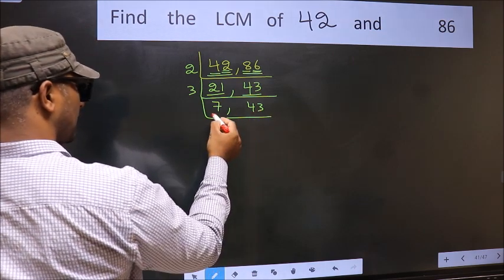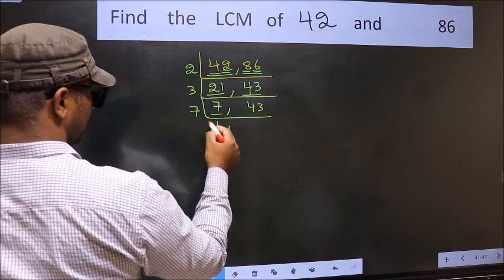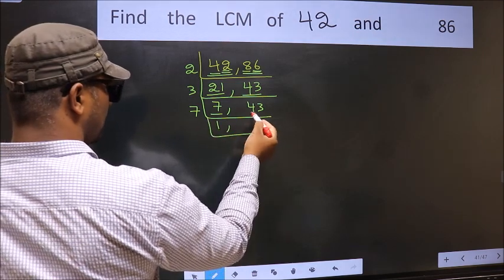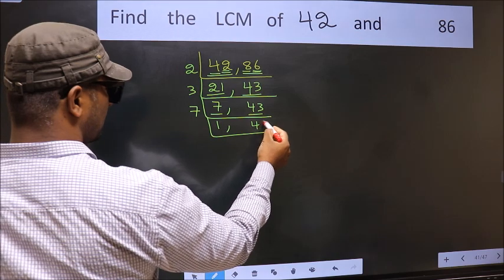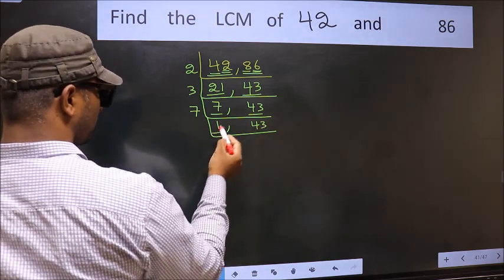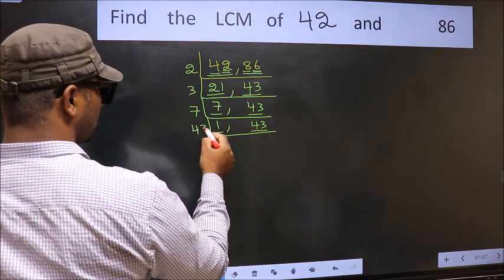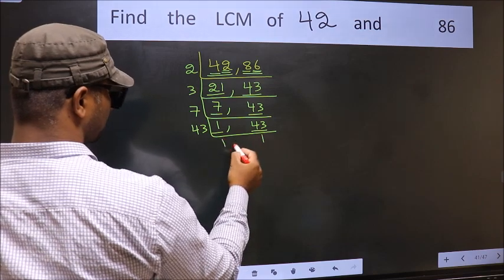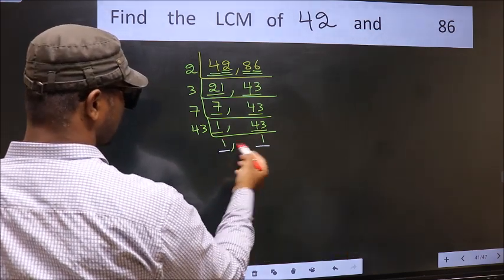Now here we have 7. 7 is a prime number, so 7 once 7. The other number 43, not divisible by 7, so we write it down as it is. Now we got 1 here, so focus on the next number 43. 43 is a prime number, so 43 once 43. So we got 1 in both the places.